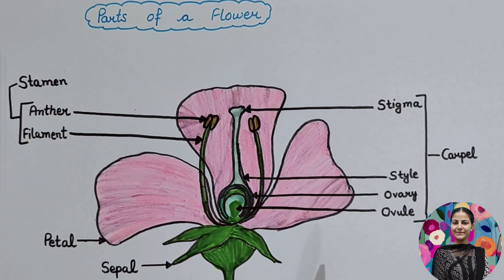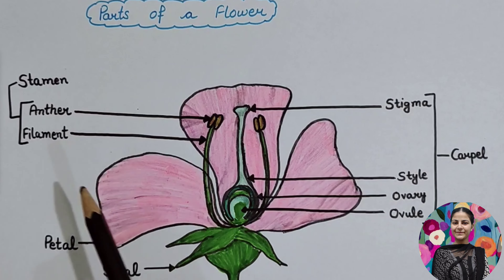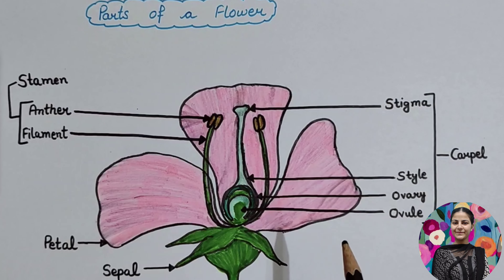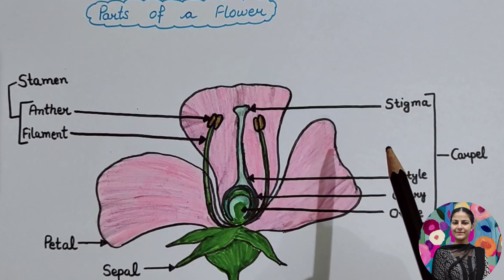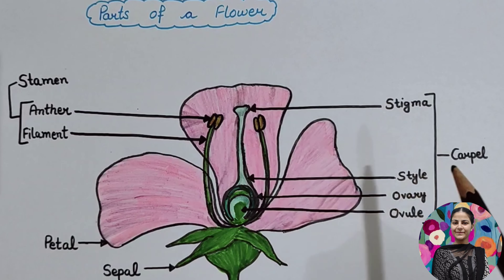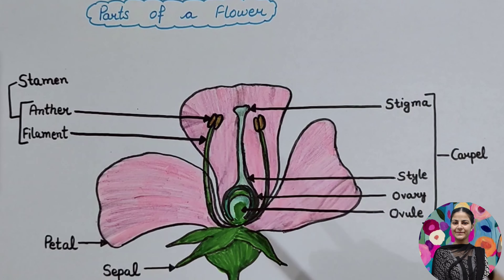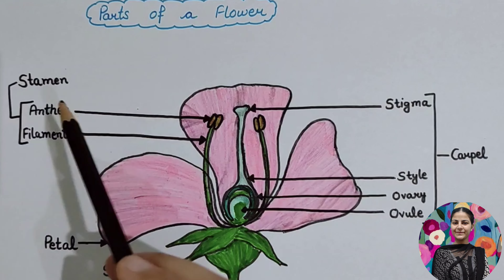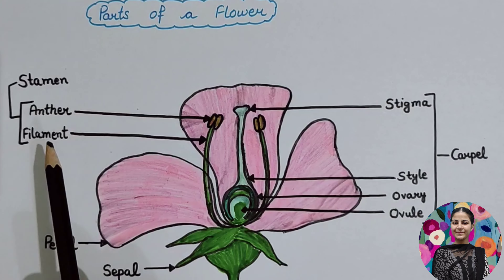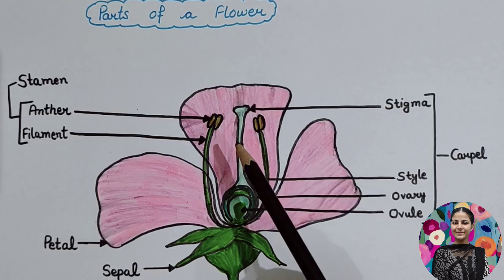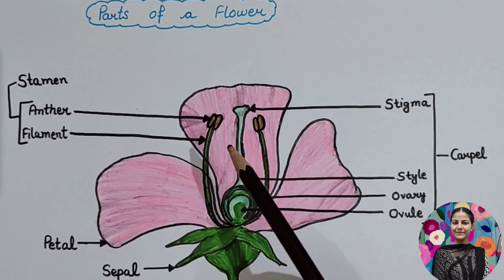Now we will see the reproduction. The male and female reproductive parts produce gametes. The ovary contains ovules, which have the female gametes in the form of an egg. The stamen has an anther which produces pollen grains, and these pollen grains are the male gametes.